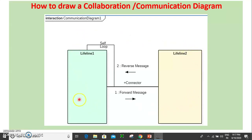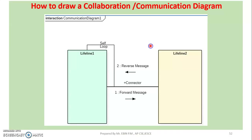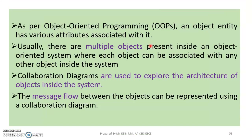In a Collaboration Diagram, there are lifelines and messages. As per Object Oriented Programming, an object entity has various attributes associated with it. Usually, there are multiple objects present inside an Object Oriented System.